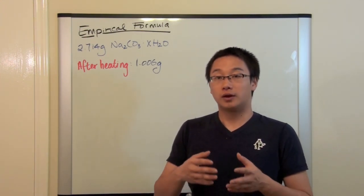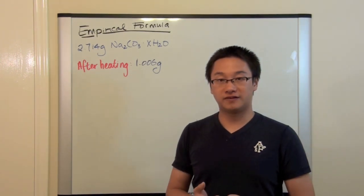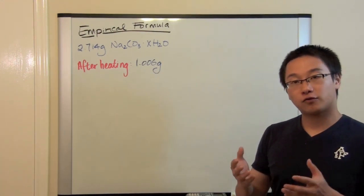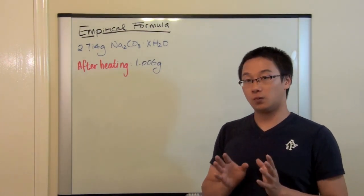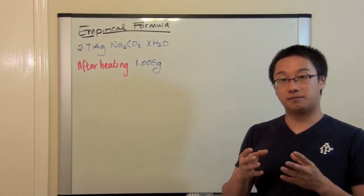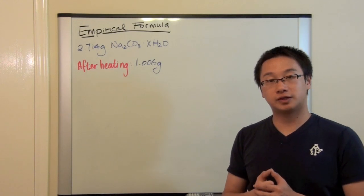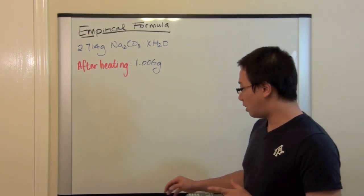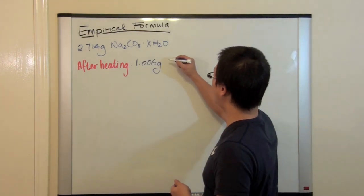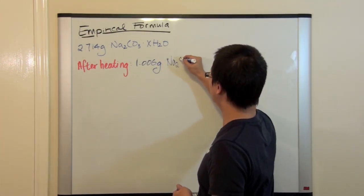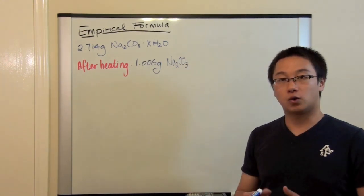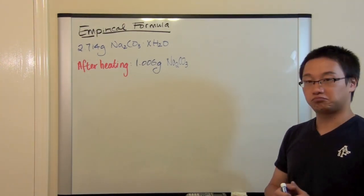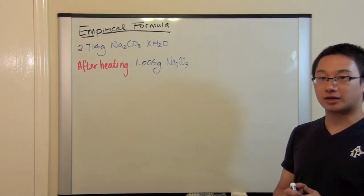The way we find out the number of water molecules in the compound is to find the mass of water in the compound. We remove the water molecules by boiling them away — by heating it hot enough, the water evaporates and changes to steam. After heating and removing most of the water molecules until constant mass, we have a mass of 1.006 grams. This means we have 1.006 grams of just sodium carbonate — the anhydrous salt, without any water.